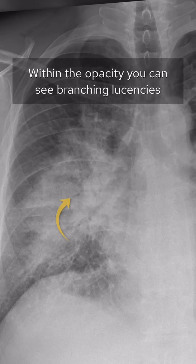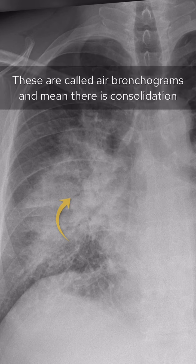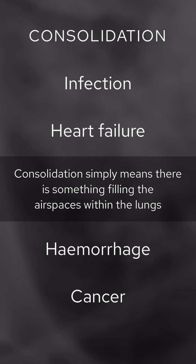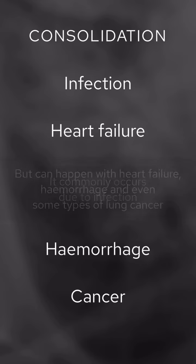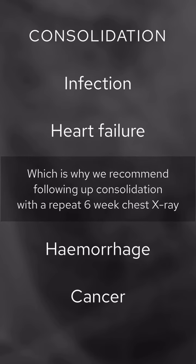Within the opacity you can see branching lucencies. These are called air bronchograms and mean there is consolidation. Consolidation simply means there is something filling the air spaces within the lungs. It commonly occurs due to infection but can happen with heart failure, hemorrhage, and even some types of lung cancer, which is why we recommend following up consolidation with a repeat six-week chest x-ray.